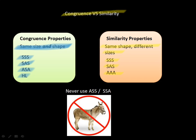With neither congruence nor similarity can we use ASS — and remember SSA is just ASS backwards — so we can't use either of those. It's actually easy to remember the one we absolutely can't use ever. That concludes triangle similarity; we'll be practicing this quite a bit. Hope you enjoyed the video!